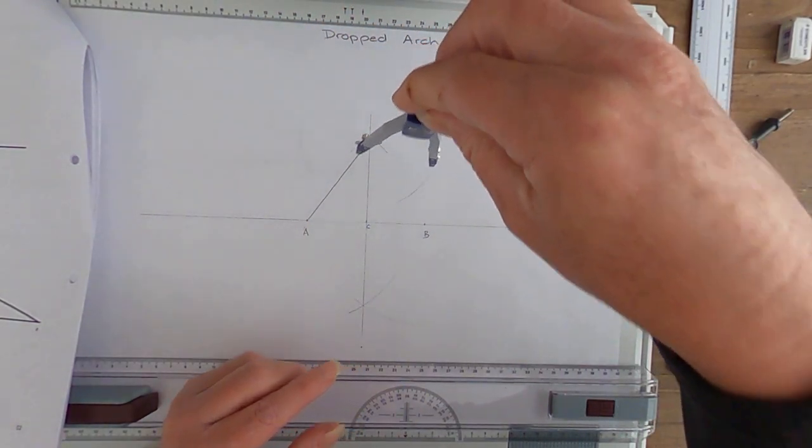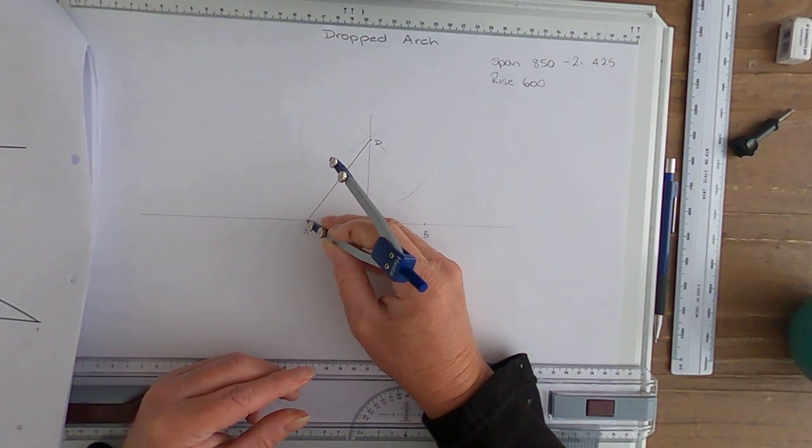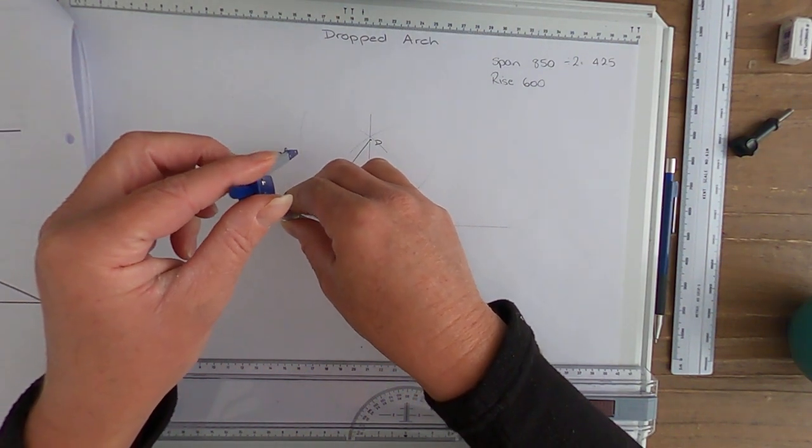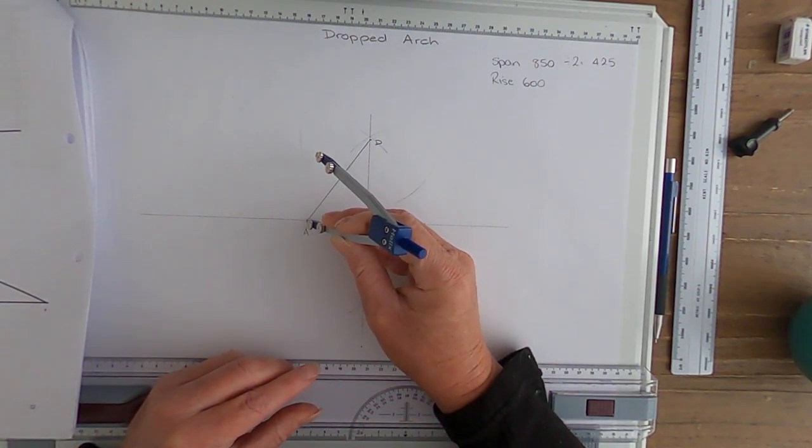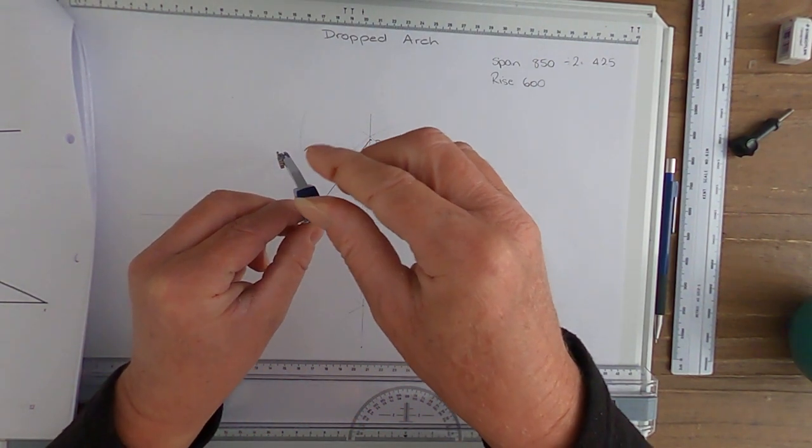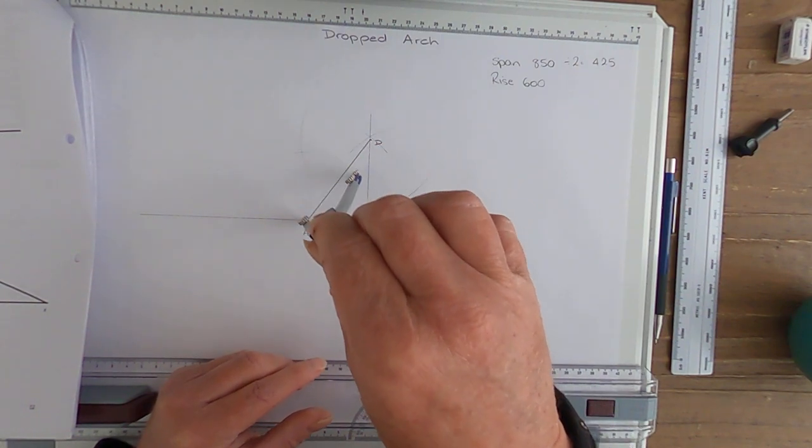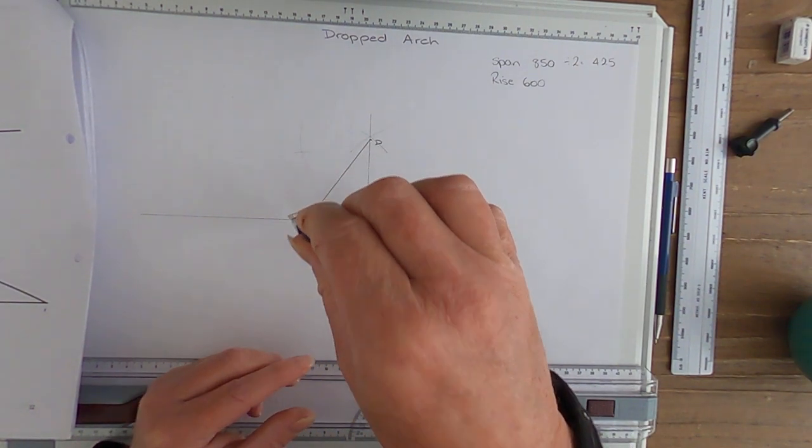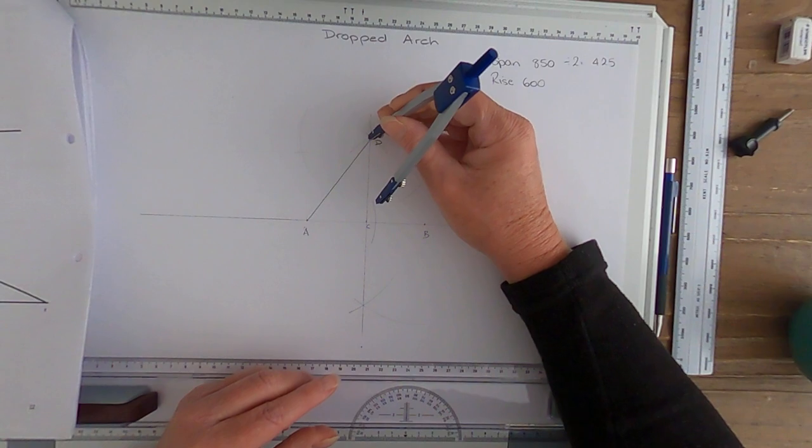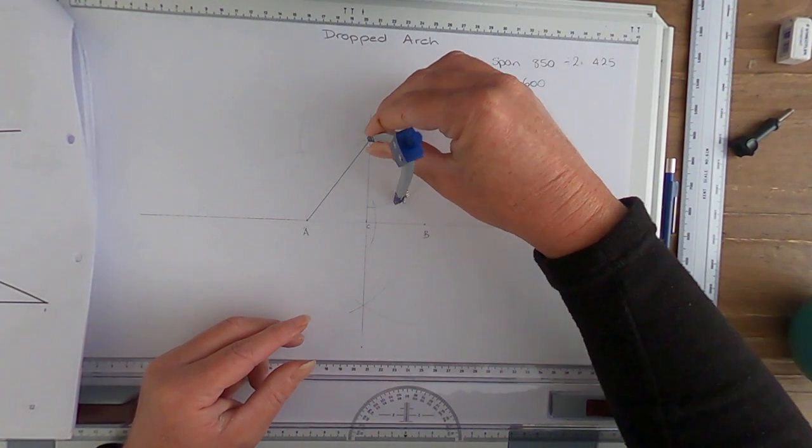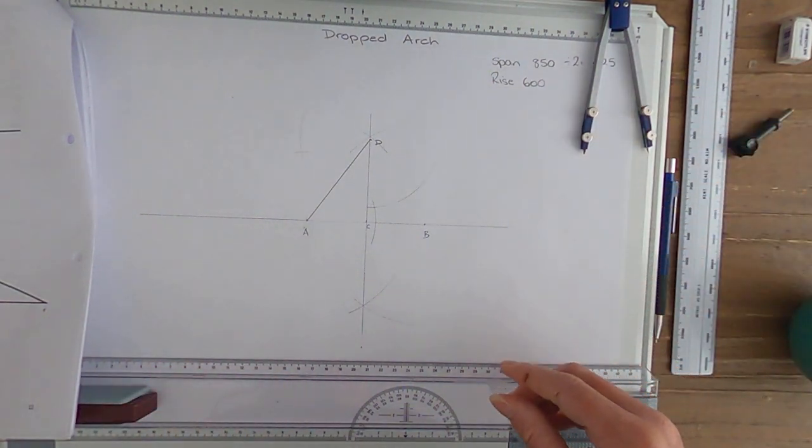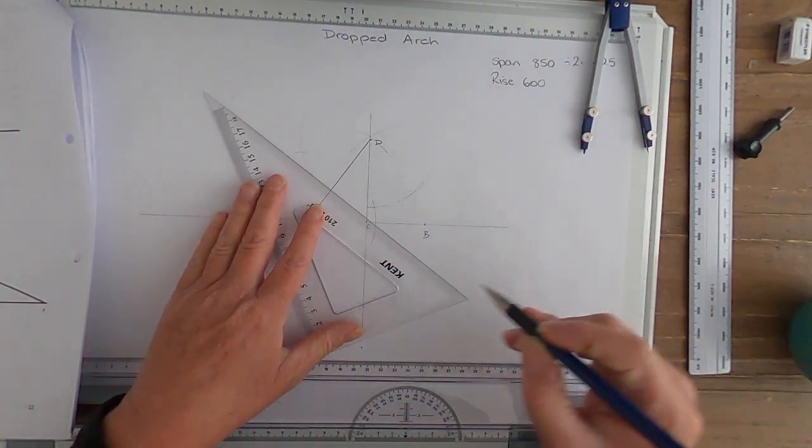Then reverse it. I put my point on the A. I have to do it again because it's moved. Scribe an arc on either side. I always go too short on my line so I have to go back.